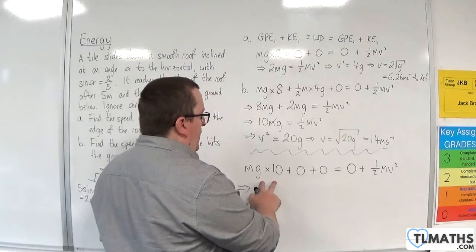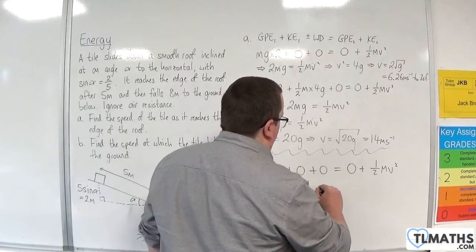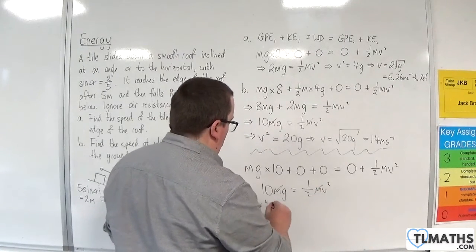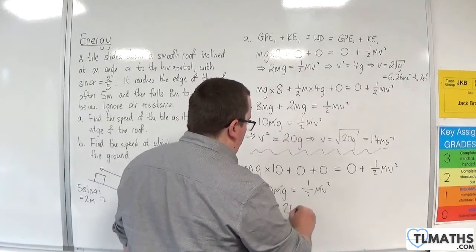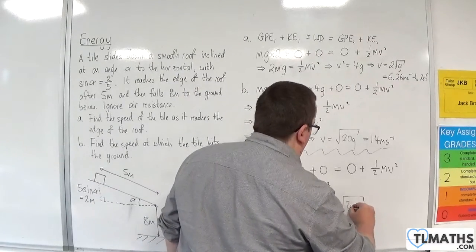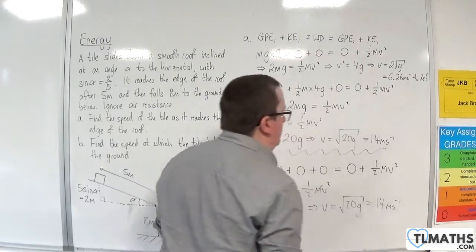So we've got 10mg equaling one-half mv squared. So the m's can cancel. And the v squared is going to be 20g. So v is the square root of 20g, which is 14 metres per second.